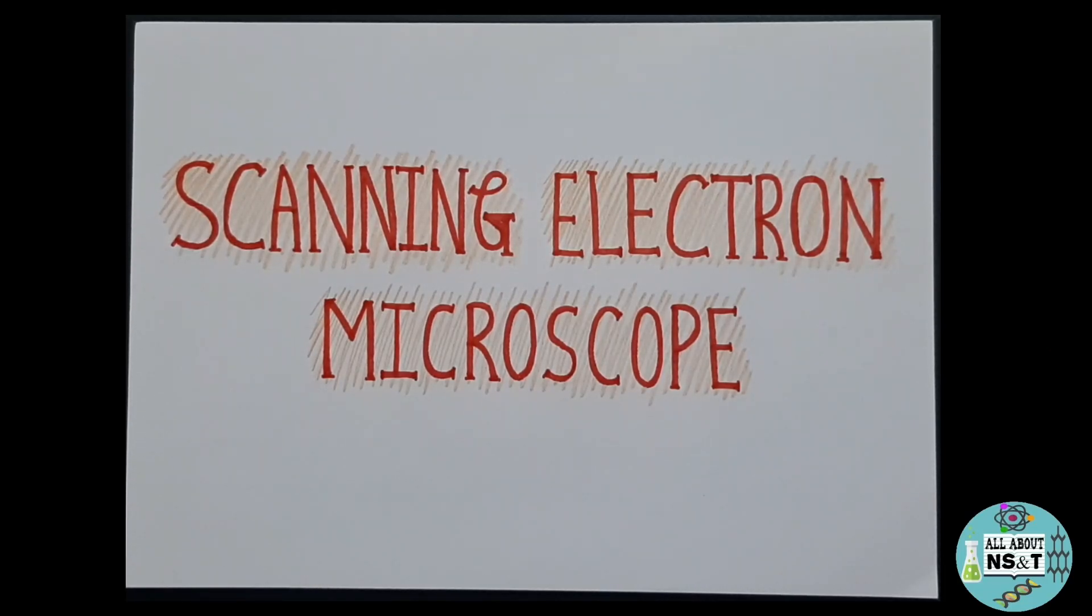Hello and welcome everybody to Know All About Nanoscience and Technology. In today's video we'll be learning about one of the techniques involved in characterizing nanomaterials, that is about Scanning Electron Microscope, which is also known as SEM. SEM is one of the most widely used techniques used in characterization of nanomaterials and nanostructures.